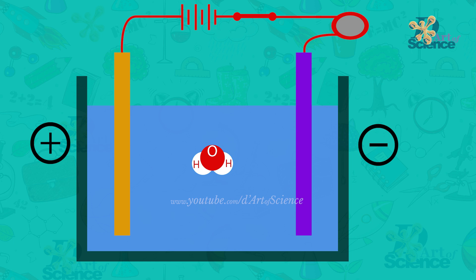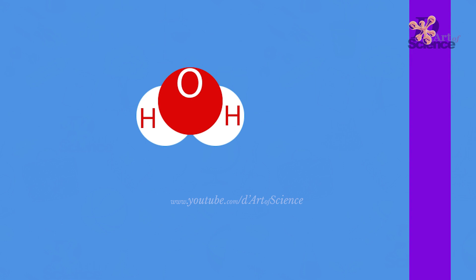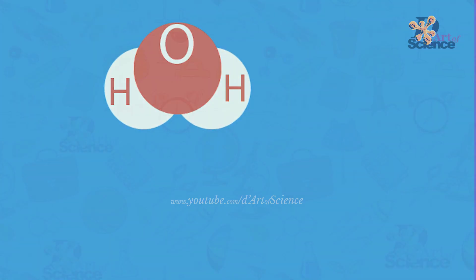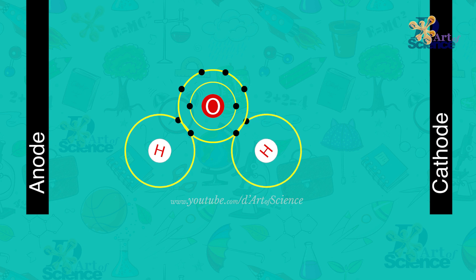But now let me explain the actual reason. You saw that in each water molecule, there are two hydrogen atoms and one oxygen atom, H2O. And at the atomic level, this is how they are bonded.